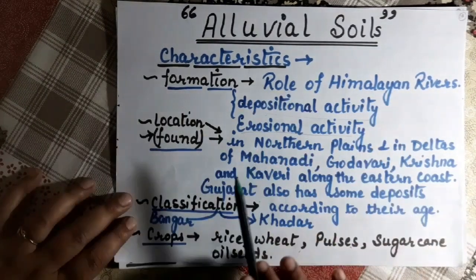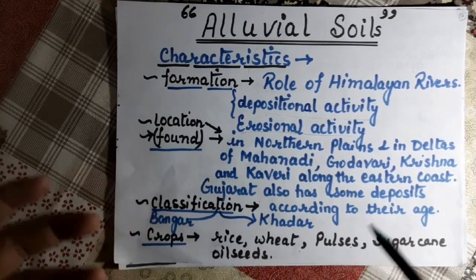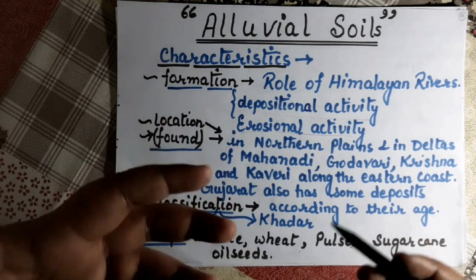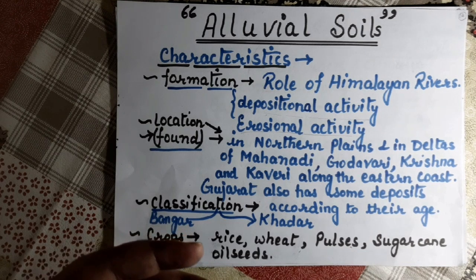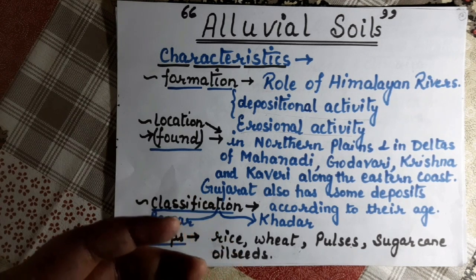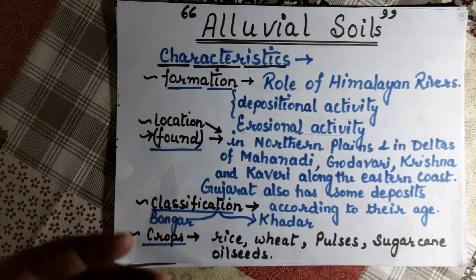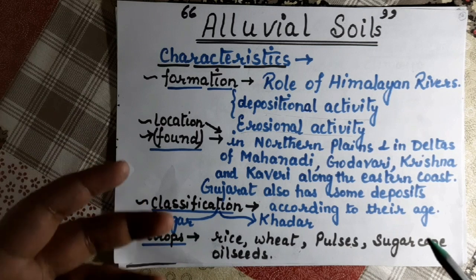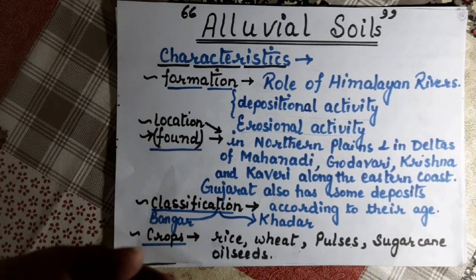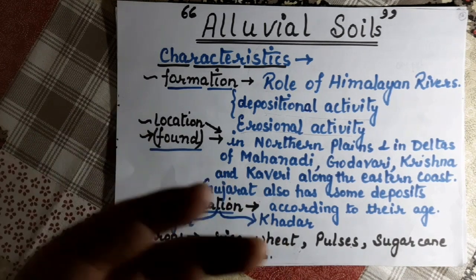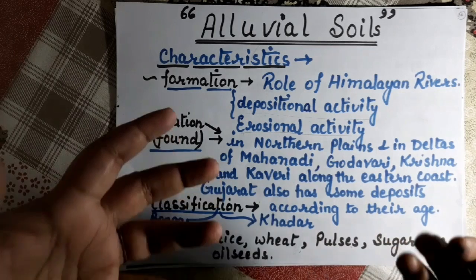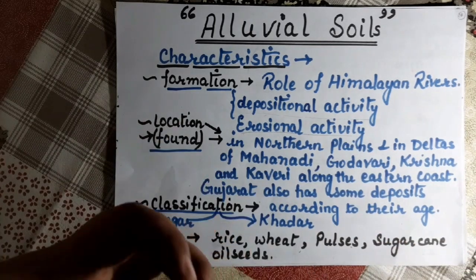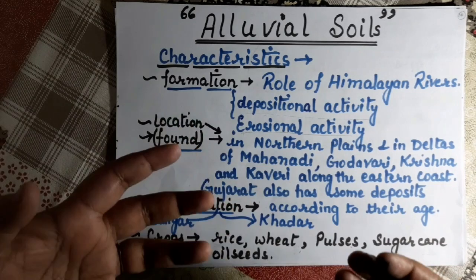Deltas are also responsible for alluvial soil formation. Alluvial soils are found in the eastern coastal area as well. In the western coastal areas, rivers are fewer and the Western Ghats prevent delta formation, but in the eastern area deltas form easily. Deltas are the storehouse of fertile soil — that is, alluvial soil.